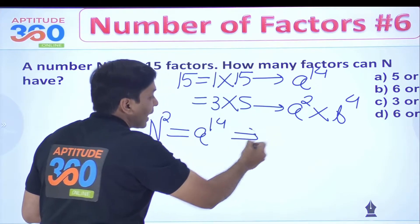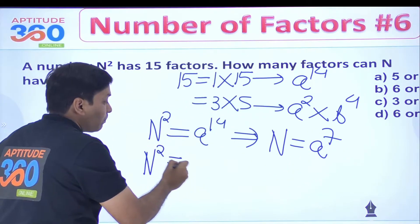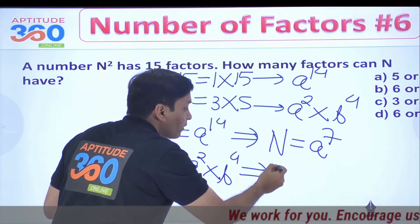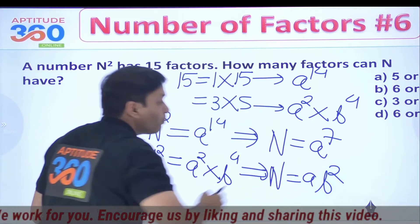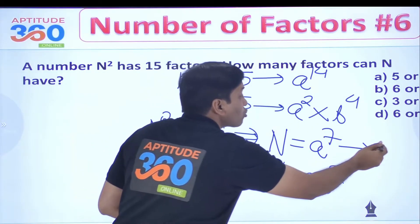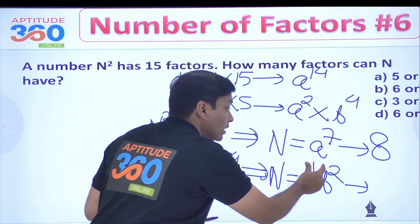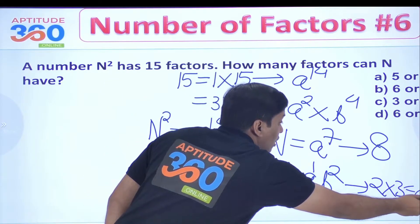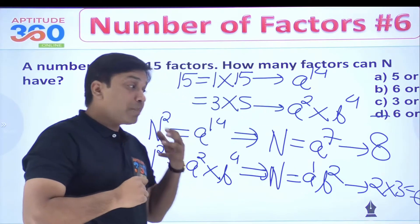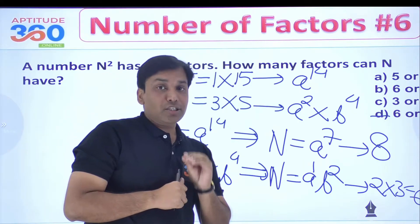If N² = a^14, then N = a^7. The number of factors of N is 7 + 1 = 8. If N² = a² × b⁴, then taking the square root gives N = a × b². The number of factors in this case is (1+1)(2+1) = 2 × 3 = 6. So N can have either 6 or 8 factors — it is a simple problem once you use what we learned in the previous four videos.